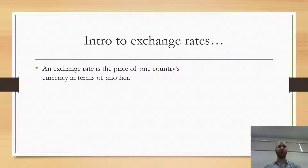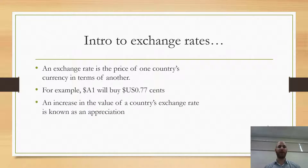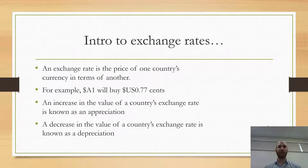Put it very simply, an exchange rate is the price of one country's currency in terms of another. For example, one Aussie dollar will buy 77 US cents. An increase in the value of a country's exchange rate is called an appreciation, and the flip situation in which the currency goes down is known as a depreciation.